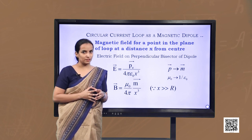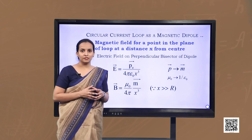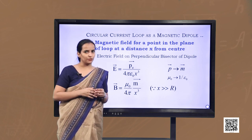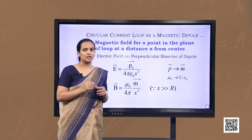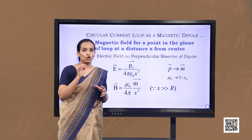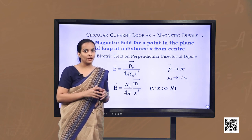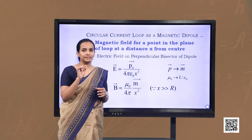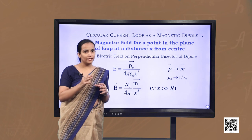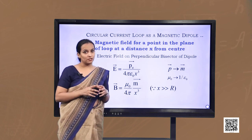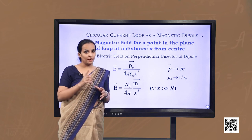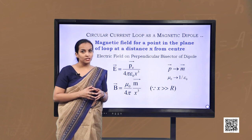However, there is a fundamental difference between electric and magnetic dipoles. An electric dipole is built up of two elementary units — charges — meaning a single charge (electric monopole) can exist. But in magnetism, a magnetic dipole or current loop is the most elementary element; the equivalent of magnetic monopoles is not known to exist.